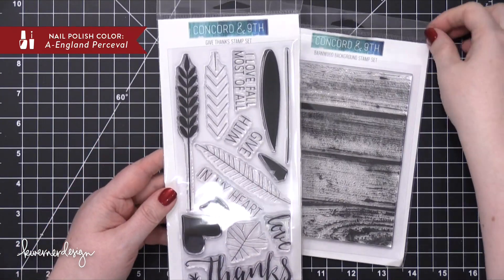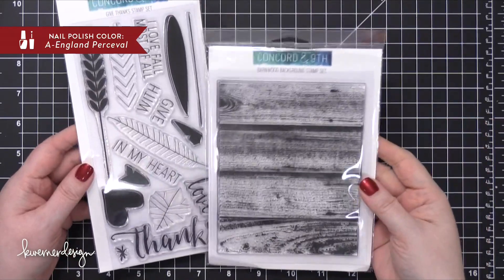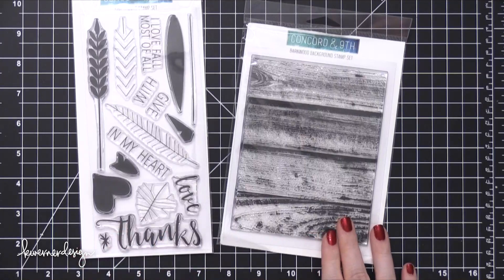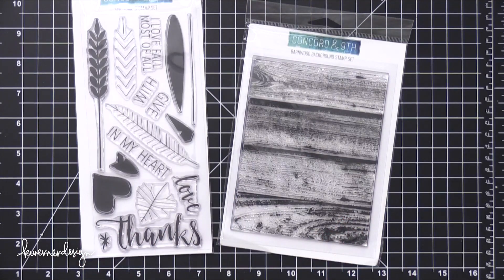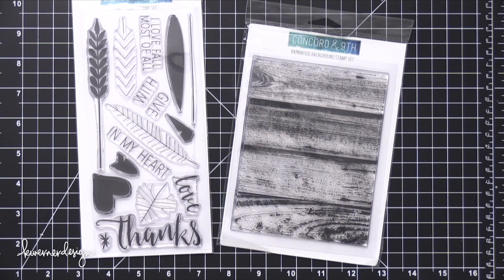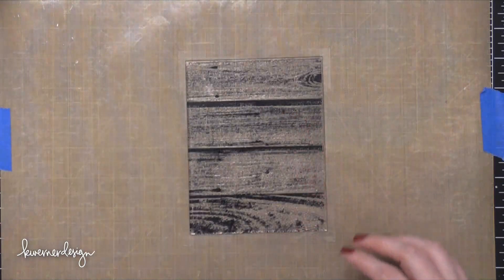This is part of a month long blog hop that Concord & 9th is doing. They're having one person each day of the month feature some of their products and today is my day. The thing that's cool about this is that there is a $20 gift card to Concord & 9th's shop up for grabs at my blog. So if you want a chance to win some money to spend in their store, please head over to my blog. There's a link in the top corner.